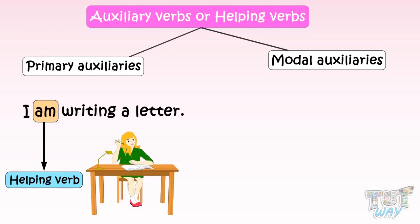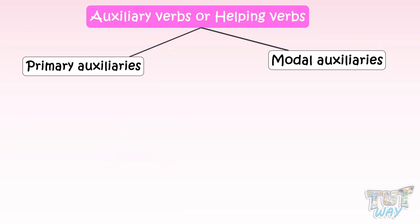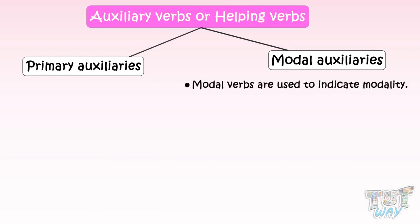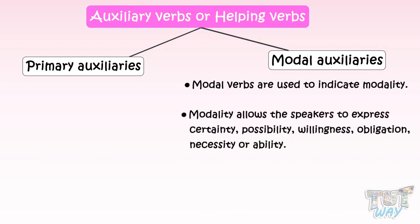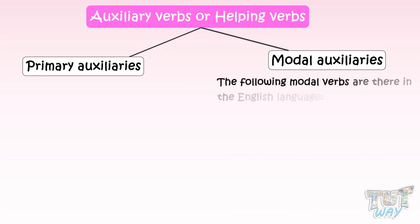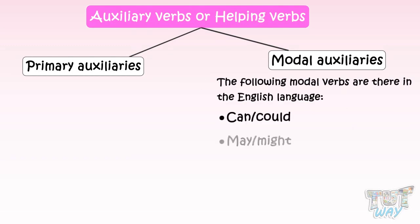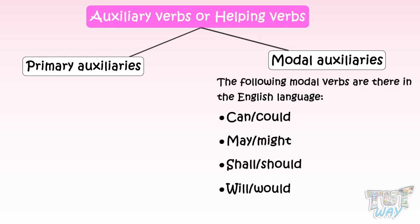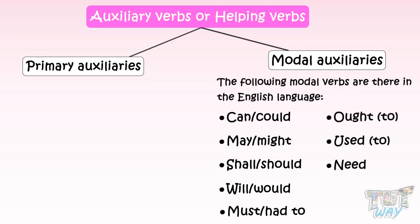The other category of auxiliaries is modal verbs. Modal verbs are used to indicate modality, which allows speakers to express certainty, possibility, willingness, obligation, necessity, or ability. The modal verbs in the English language are: can, could, may, might, shall, should, will, would, must, had to, ought to, used to, need, and dare. We will learn more about modal verbs and their uses in the following sections.